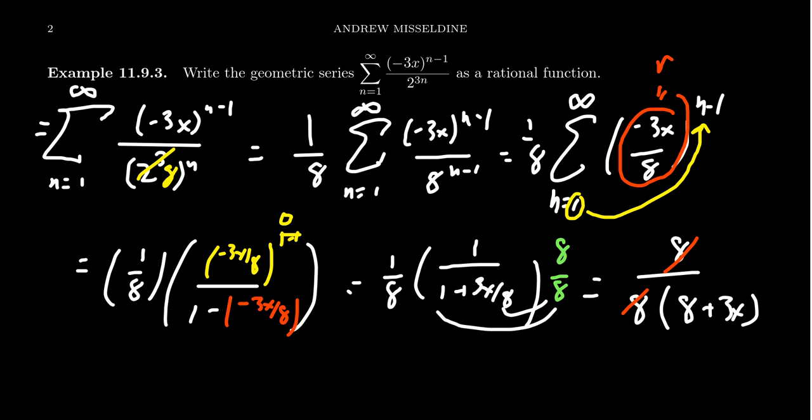In which case, we see that our geometric series can be written as the function 1 over 3x plus 8. So this rational function is equal to this geometric series. But there's a stipulation, of course, it's only going to be true on the interval of convergence when x is